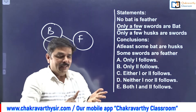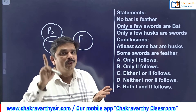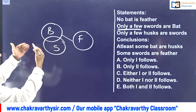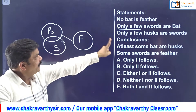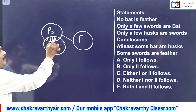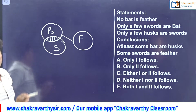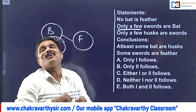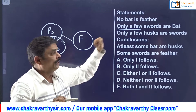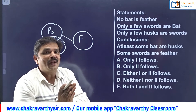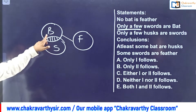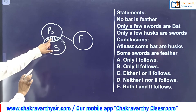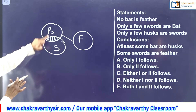If they give 'some B's are S', you draw with an overlapping area but don't know which part is which. But when they give 'only a few swords are bats', only that specific overlapping part is common. 'Only some B's are S' means from the same diagram I can prove 'some B's are not S' also true. When they give simply 'some', we don't know; when they give 'only some', no other variable should come inside that intersection area except B and S.